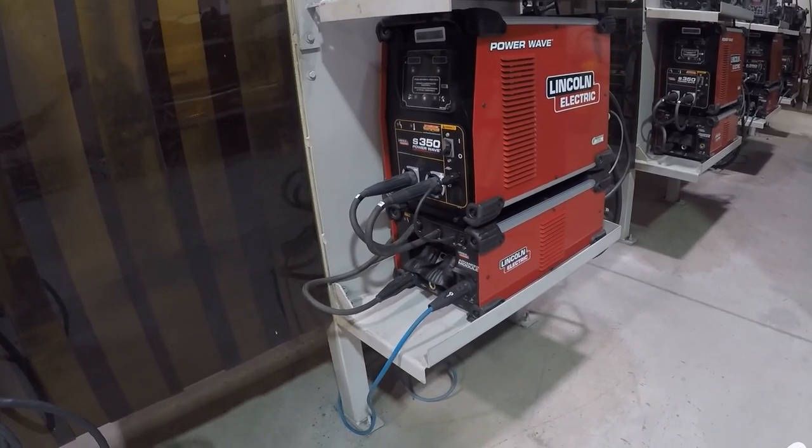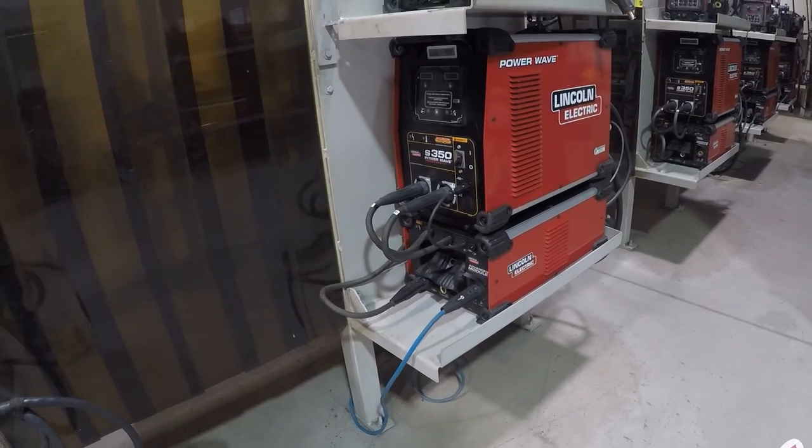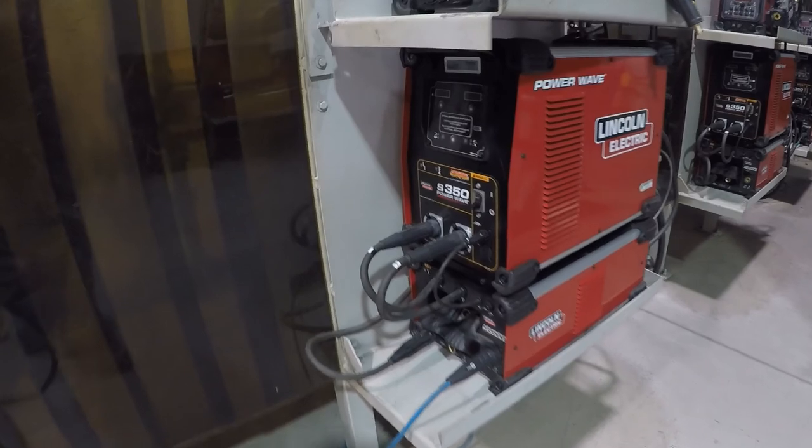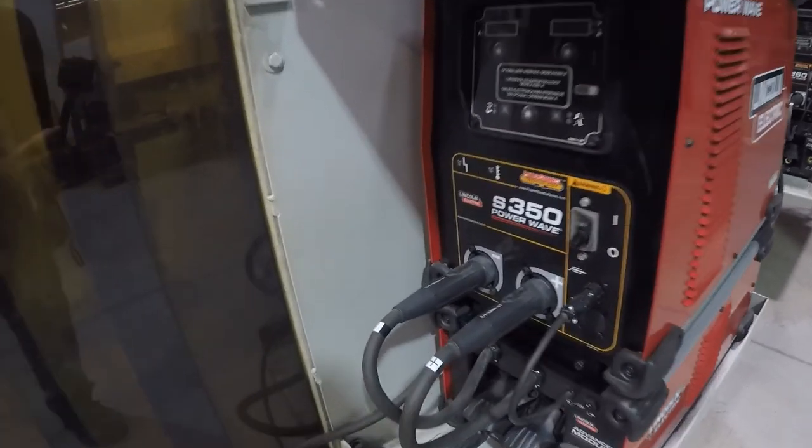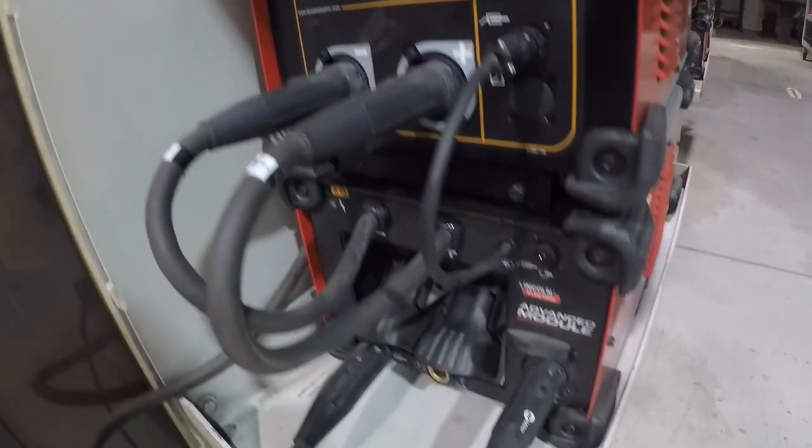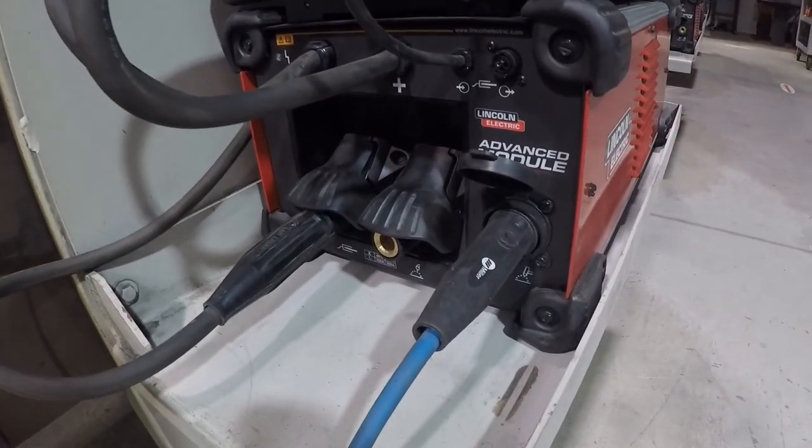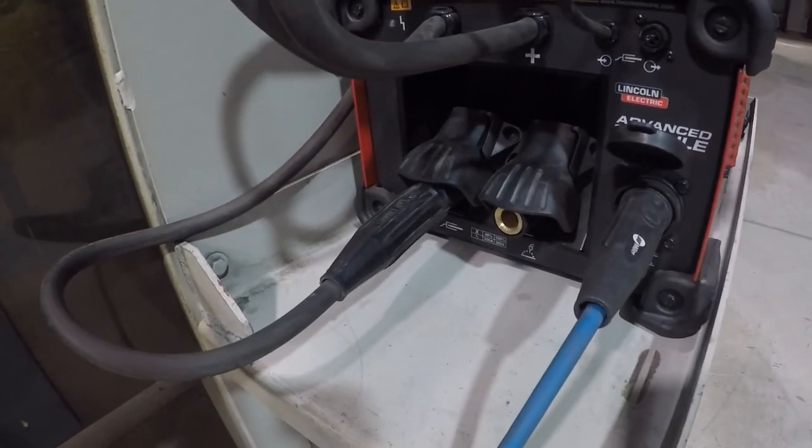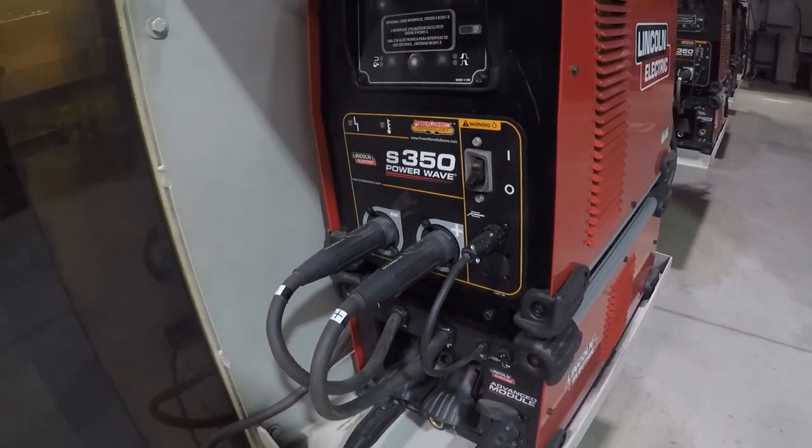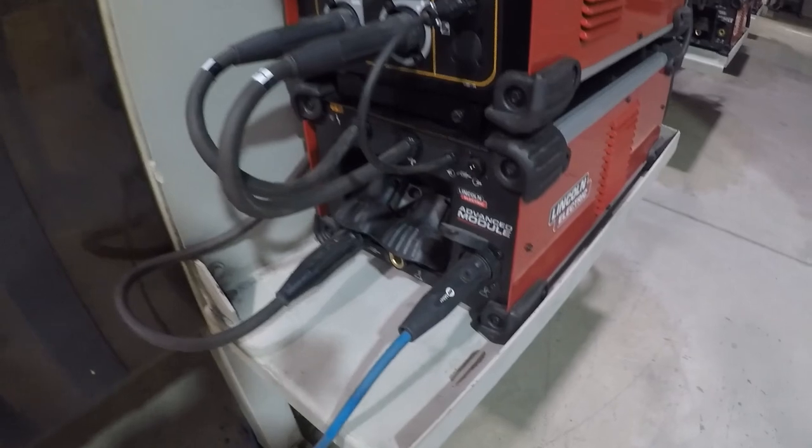And surface tension transfer for pipe welding. Without that module we just use the negative and the positive up here to plug in right here. But if you do have this advanced module, we do plug in down here. That's the only real difference between having one of these and not.